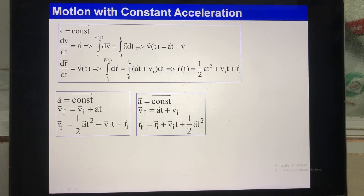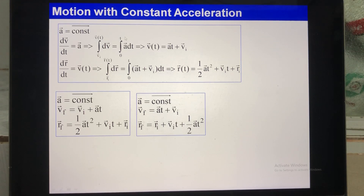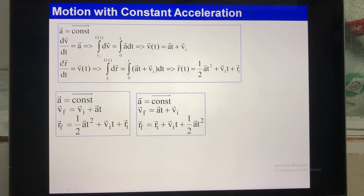At the moment t equals 0, you have initial velocity V₀; at the next moment t, you have final velocity Vt. Since A is a constant, you can move it out from the integration sign, perform the integration, and you get the expression for velocity.